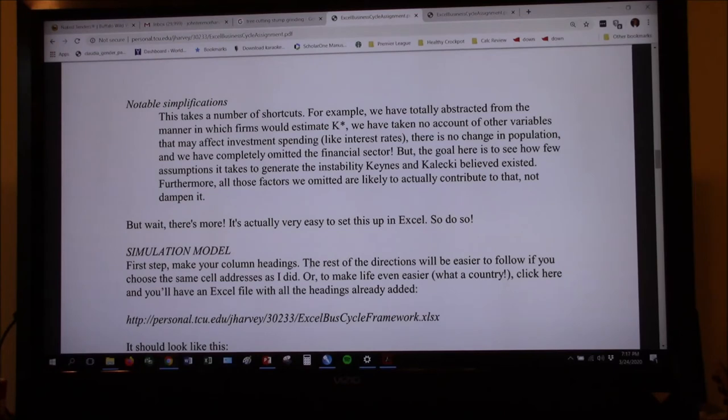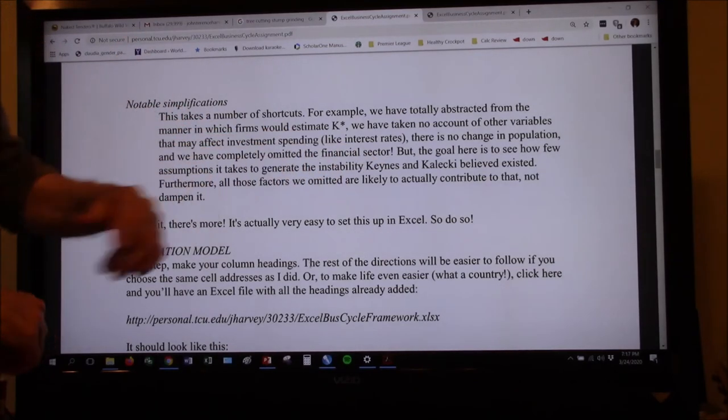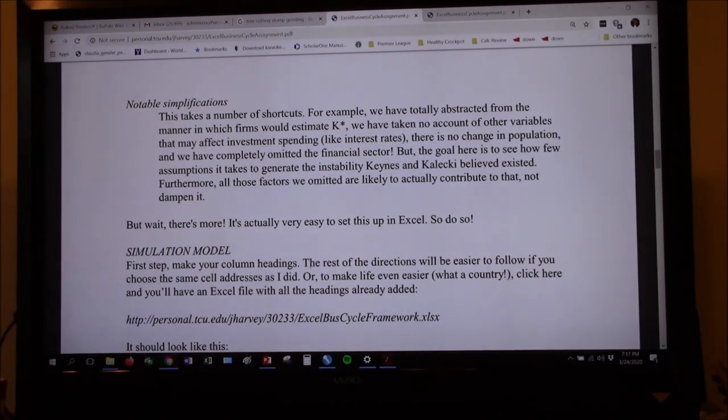So over time, I think we're going to do, I think, 50 time periods. I can't think of that. So 50 quarters. And we have completely omitted the financial sector, although we're going to add it in later. Now, but the goal here is to see how few assumptions it takes to generate the instability that Keynes and Kalecki believed existed. Furthermore, all the factors we omitted are likely to actually just contribute to that and not dampen it.